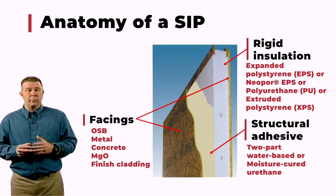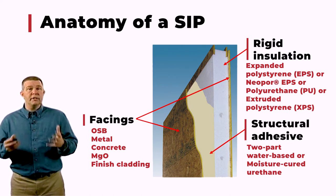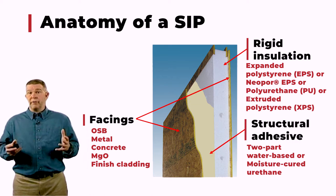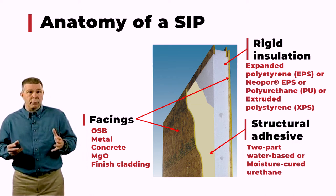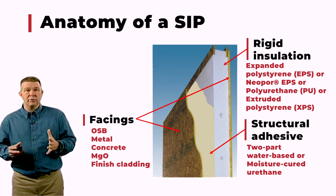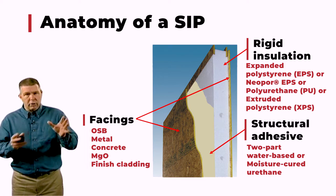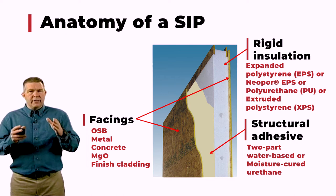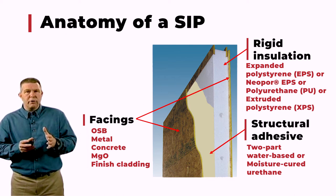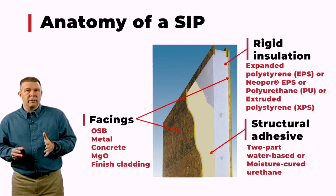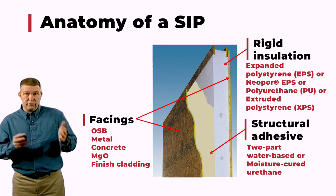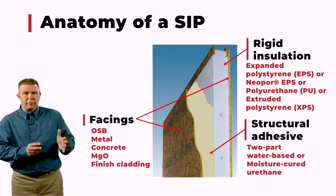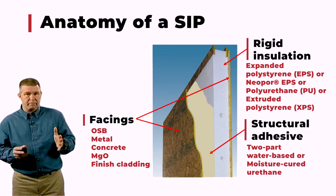Other types of skins that can be applied might be a finished cladding or finished material, though there are some real disadvantages in some cases when putting a finished skin on the outside of a SIP. You can put a finished clad directly on the outside of a panel so that once it's installed you don't have to do anything else to it. Those are the facings we have on a SIP.